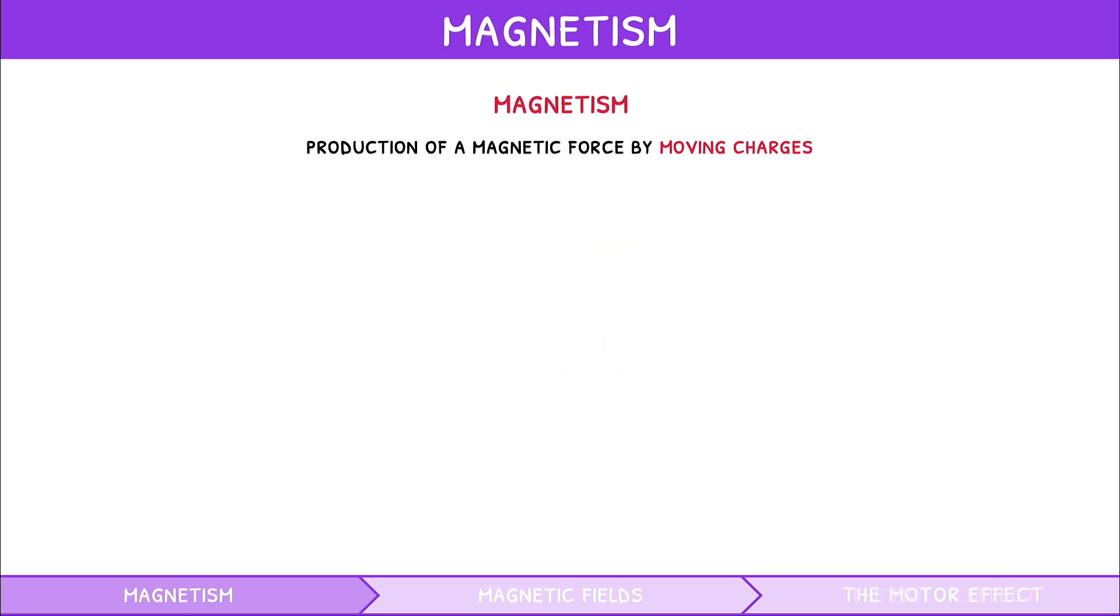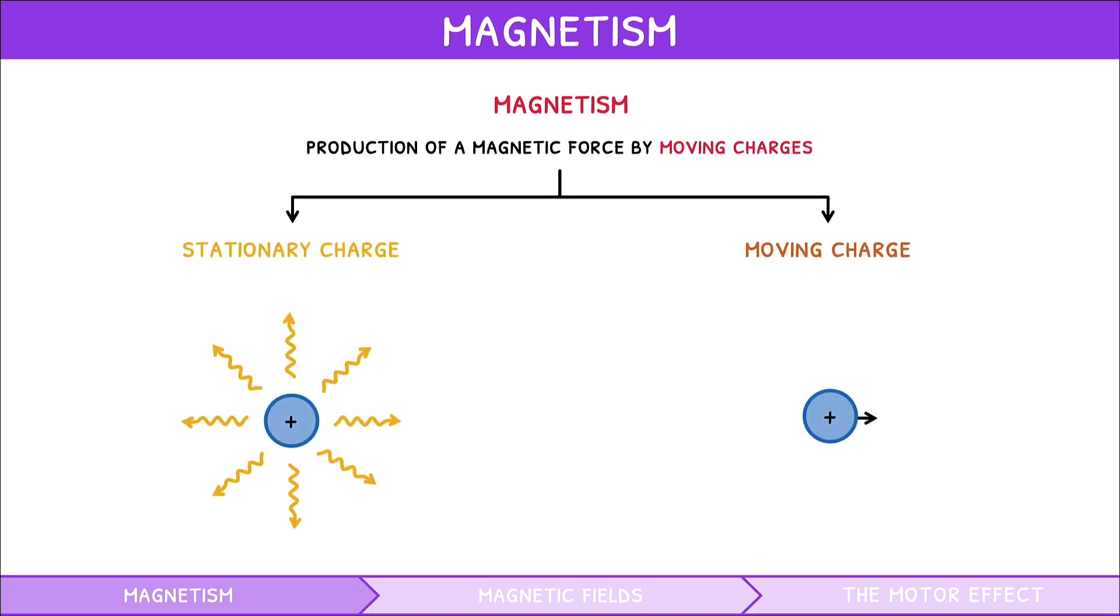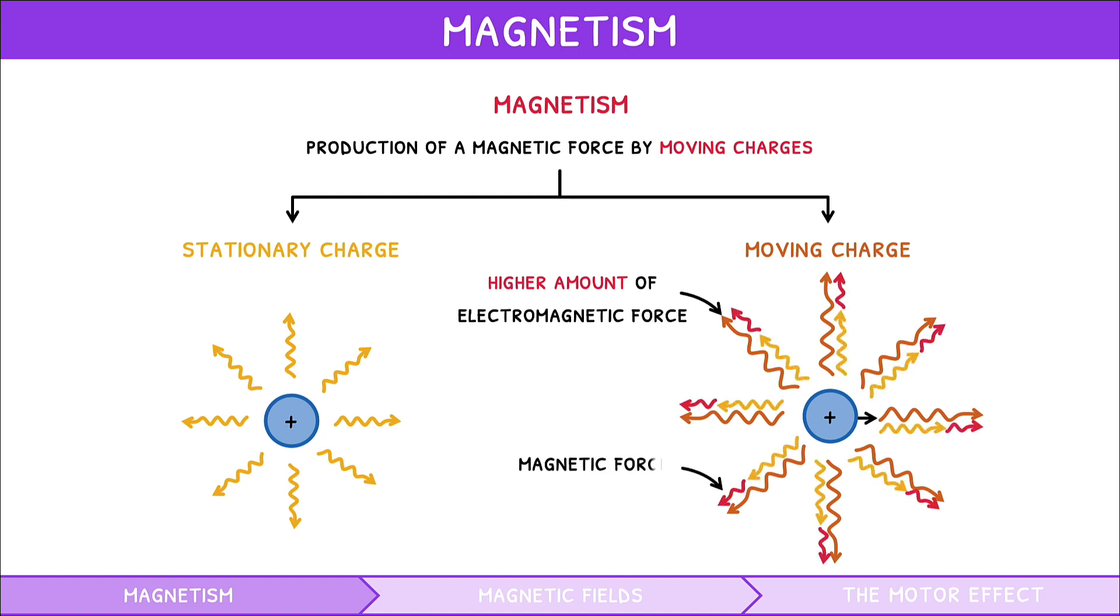This magnetic force stems from the electromagnetic force exerted by charges. You might wonder why this is only produced by moving charges and not stationary charges. However, this is an incredibly complex phenomenon that you will not be tested on in your exam. Therefore, the simplest explanation is that moving charges exert a higher amount of electromagnetic force than is explained by the electrostatic force. This additional force is the magnetic force.